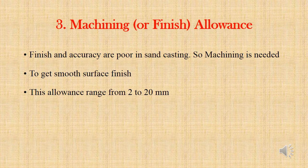The next type is machining or finish allowance. The finish and accuracy achieved in sand casting are generally poor. To get a smooth surface finish, machining is needed. Extra material is provided which is subsequently removed by machining or cleaning. This allowance varies from 2 to 20 mm based on the dimension of the casting.